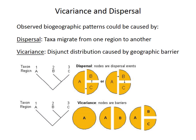Because we only know that taxon 2 and 3 share a common ancestor, we can't distinguish between the two different patterns A to C to B, or A to B to C. Disjunct distributions may also be caused by something called vicariance — where the formation of some kind of barrier, like a mountain range, an ocean basin, or a land barrier between oceans, splits a pre-existing species into two groups, allowing speciation on either side of that barrier.